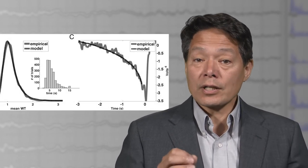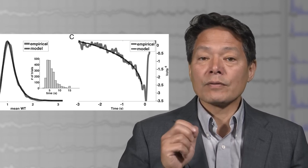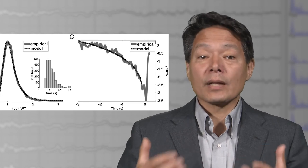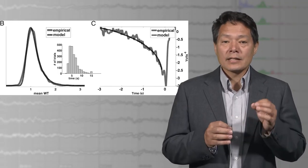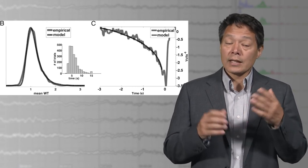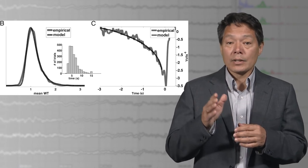Furthermore, Schurger and colleagues suggest that their model can explain why a feeling of willing is consistently reported just prior to the movement. According to their model, the crossing of the threshold represents a neural commitment to move now and it is this event that subjects report as the feeling of willing to move at time w. Beginning at that point in time, the typical process of motor preparation and execution unfolds accounting for the approximately 150 millisecond delay between time w and the movement.